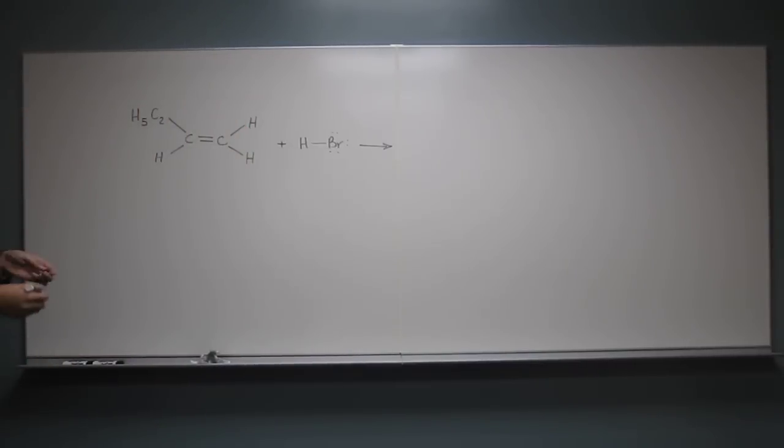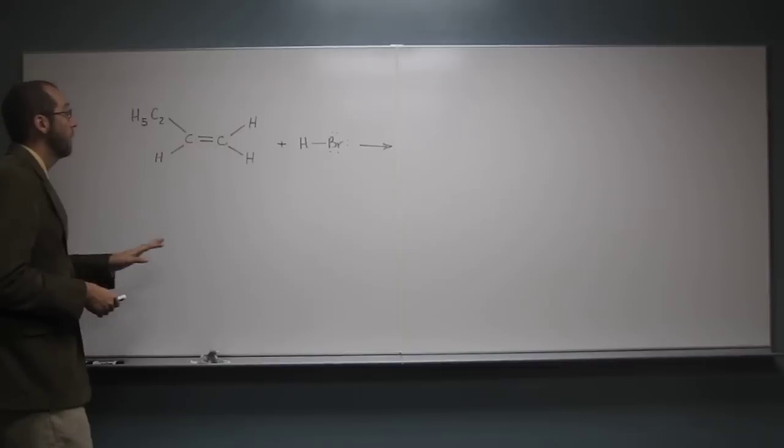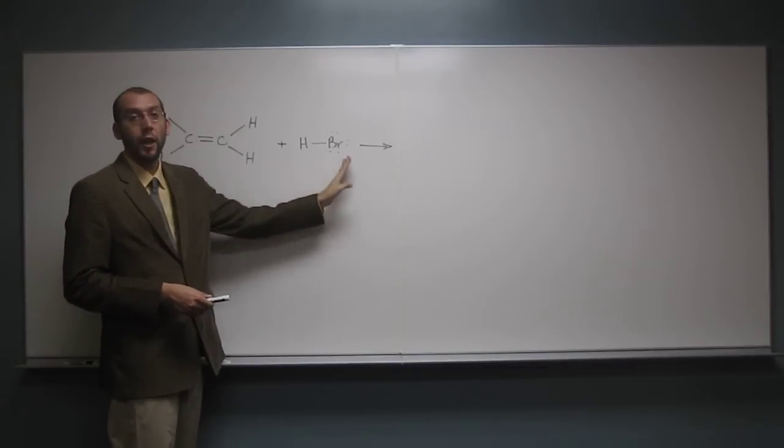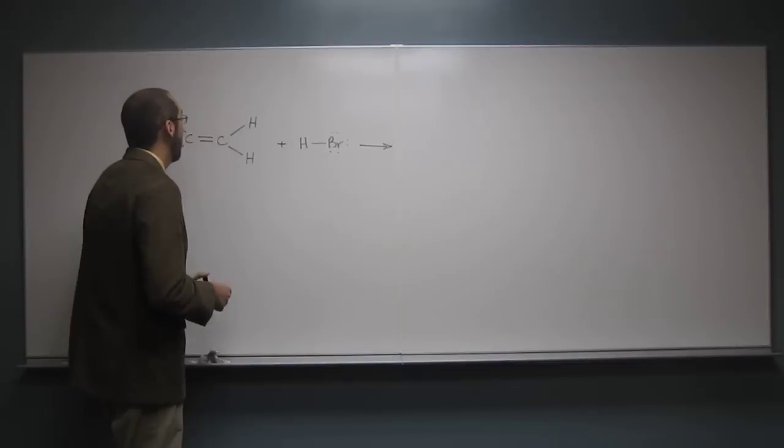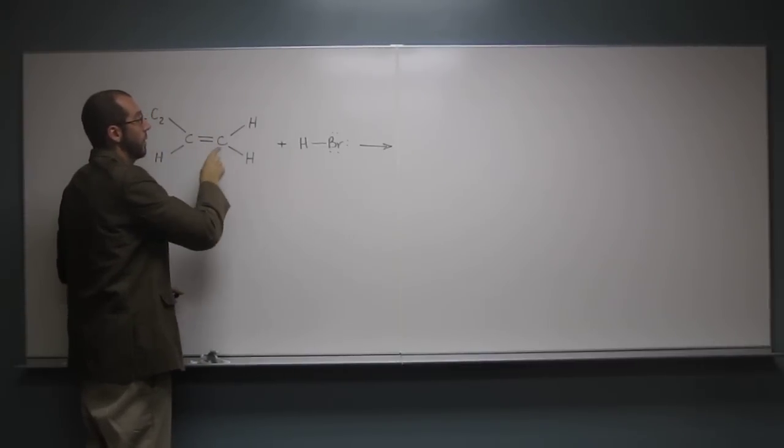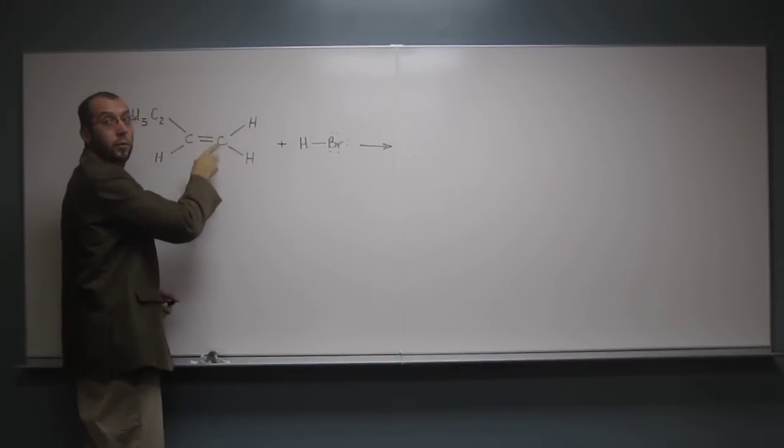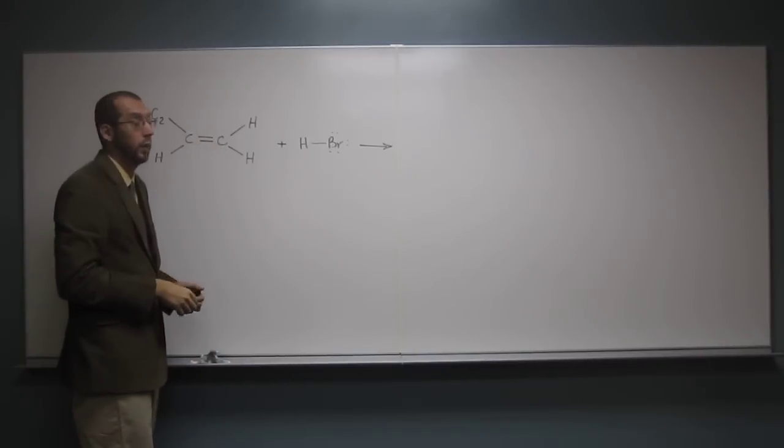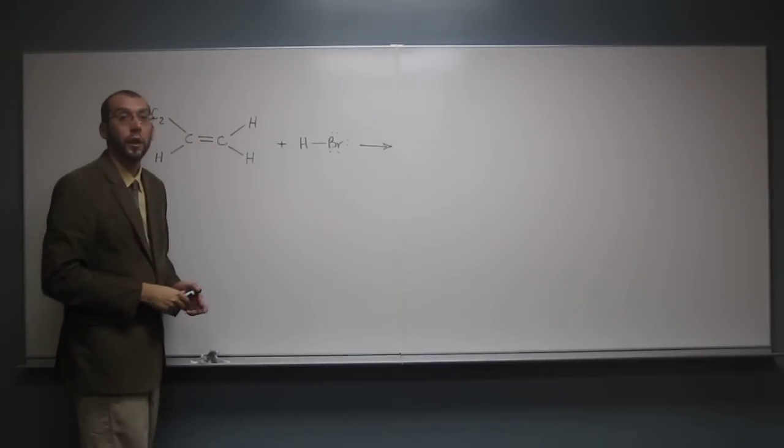So do you remember Markovnikov's rule? So whenever you have HBr or any of these halogenic acids, the H is going to go to the carbon with the most H's on it. That's called Markovnikov's rule. And the Br is going to go to the other one.